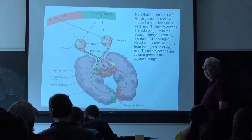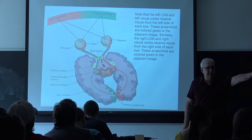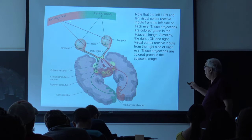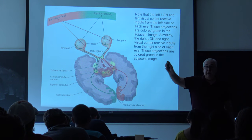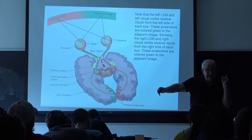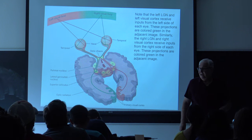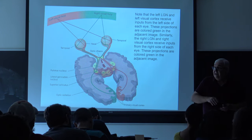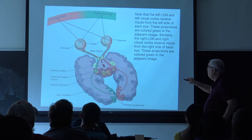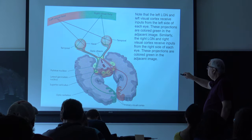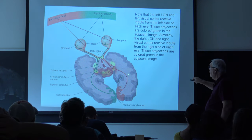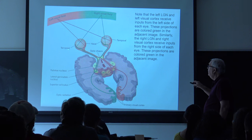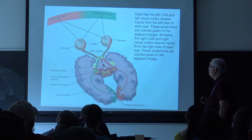The left visual field projects to the right side of your eye, and the right side of your eye sends projections to the right side of the brain. The right visual field projects to the left side of the eye, which then projects to the left side of the brain. So your right brain is processing the left side of the world, and your left brain is processing the right side. The part of the retina toward the nose is called the nasal side, and the part away from the nose is called the temporal side.